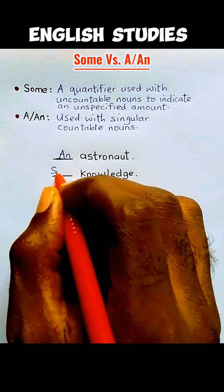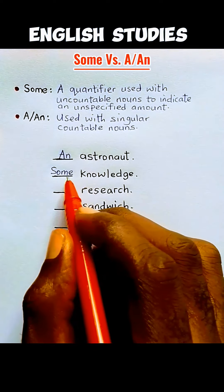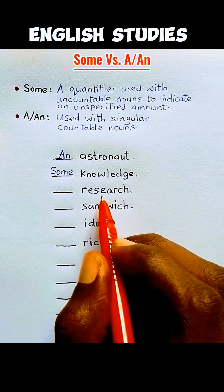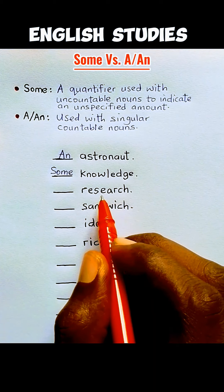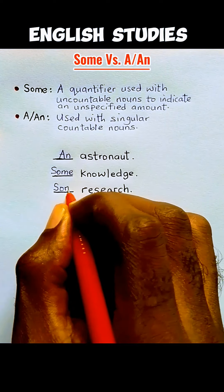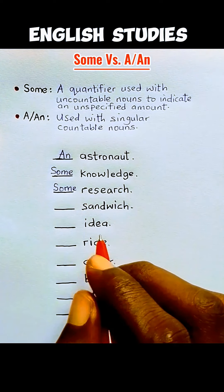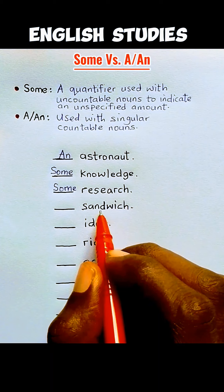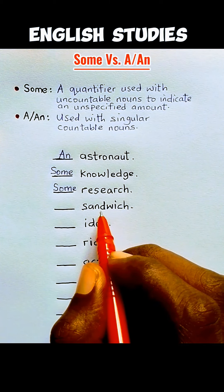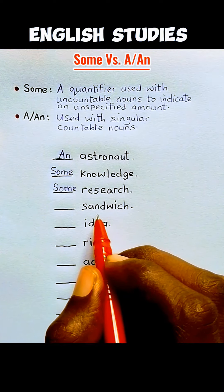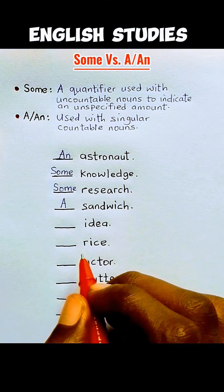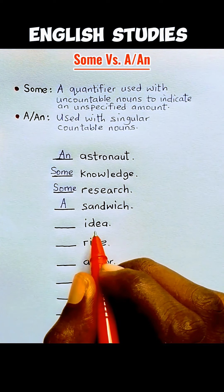'Research,' like 'knowledge,' is also an uncountable noun, so we use 'some' — some research. 'Sandwich' is a countable noun, so we are using 'a' or 'an.' Since it begins with a consonant sound, we use 'a' — a sandwich.